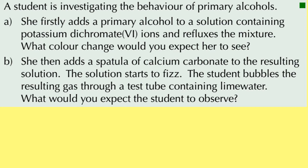In part B, she adds sodium carbonate — that's the test for acids. Because she's refluxed it, the primary alcohol has been oxidised first to an aldehyde and then all the way to a carboxylic acid. If you wanted to stop it at aldehyde, you'd have to distil the aldehyde off before it has the chance to oxidise further. So in part A we've changed the primary alcohol all the way into a carboxylic acid. The solution does fizz when added to carbonate, and when that gas is bubbled through lime water, it goes cloudy because you're making a calcium carbonate precipitate.